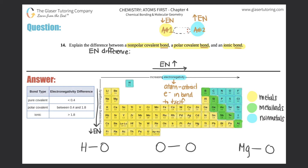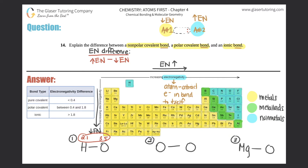Now let's find the electronegativity differences for the three examples. For the H-O bond: hydrogen has an electronegativity of 2.1 and oxygen has 3.5. You always subtract the lower from the higher — the difference should always be a positive number; if you get negative just take the absolute value. So 3.5 minus 2.1 equals 1.4.